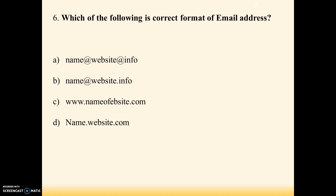Next question: which of the following is the correct format of an email address? Option A: name@website@info, option B: name@website.info, option C: www.nameofwebsite.com, option D: name.website.com. Answer is B — name@website.info. For example: mailid@gmail.com.